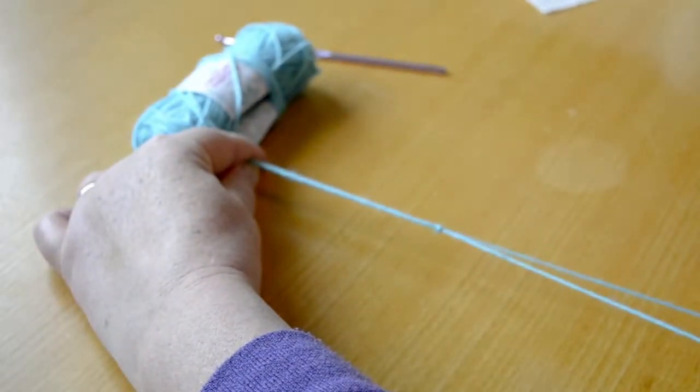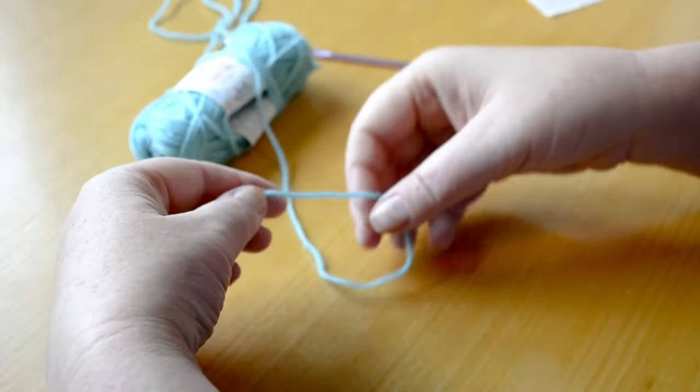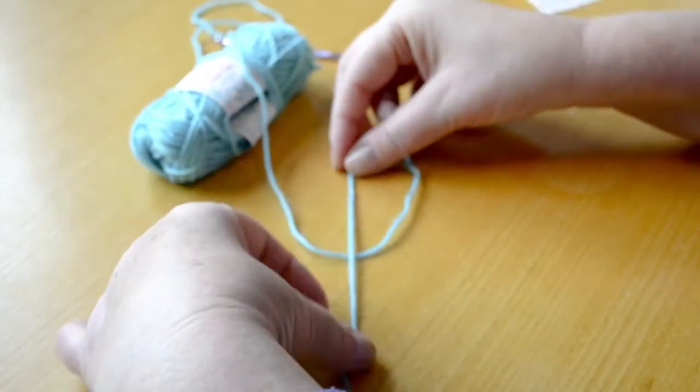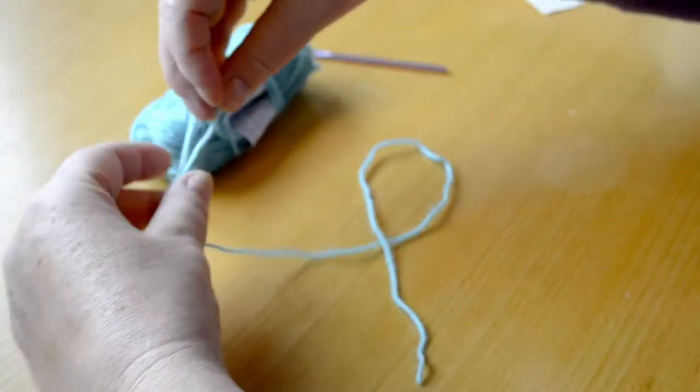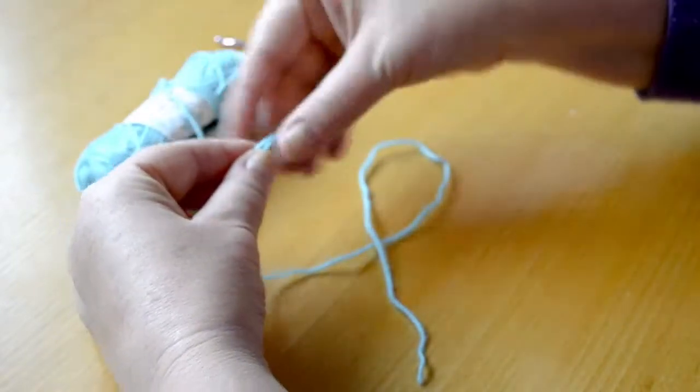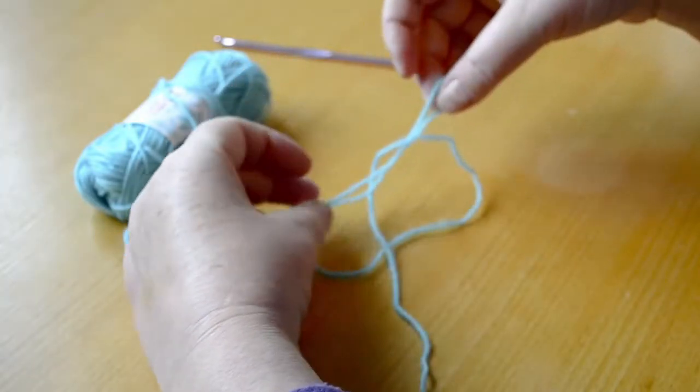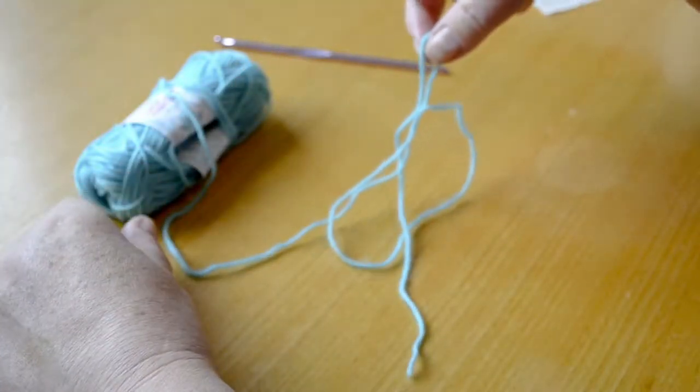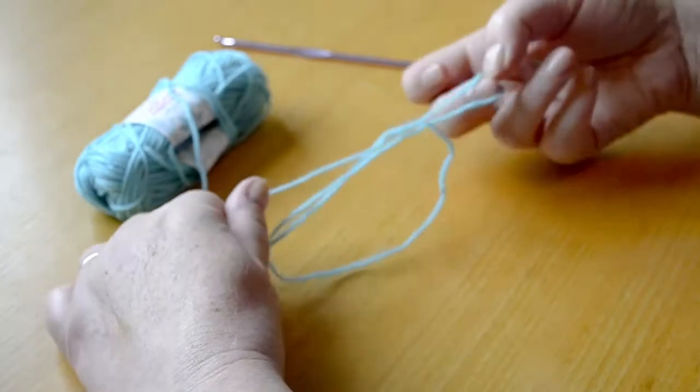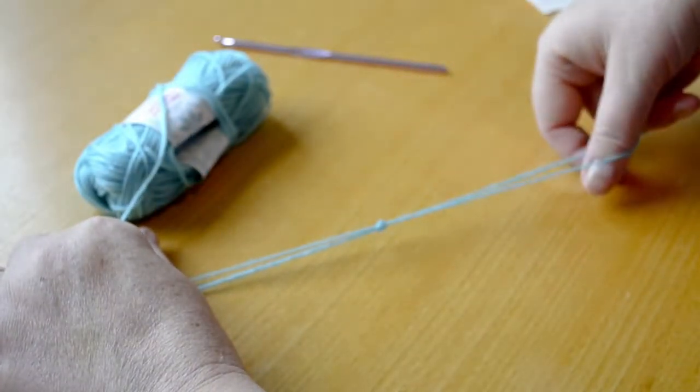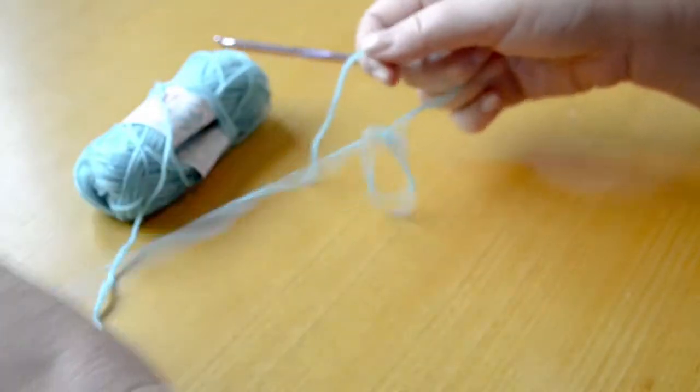Now as long as I hold on to the short end and the long end back here and gently pull, I'll have my slip knot form. I'll do that again for you. This time the short end is over the top of the long end like that. I'm gonna pinch up a piece of yarn from the ball, lift this up and poke it through. I am holding the pinched piece of yarn, and as long as I hold the long tail and the short tail and gently pull, there's the slip knot already formed for you.